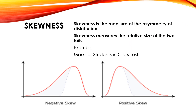In normal distribution the data is symmetrical, 50% on either side. But if for some reason data is shifted towards the right or left side, that asymmetry of the distribution is called skewness. Skewness is the measure of asymmetry of the distribution. In normal distribution both tails are identical, but if one tail is longer than the other, skewness measures the relative size of the two tails.